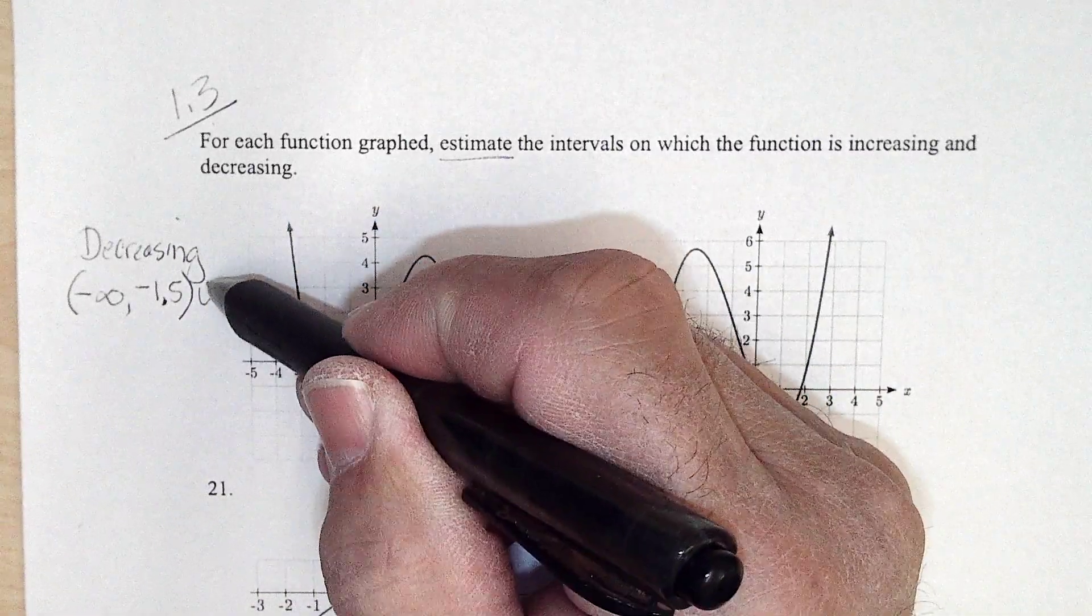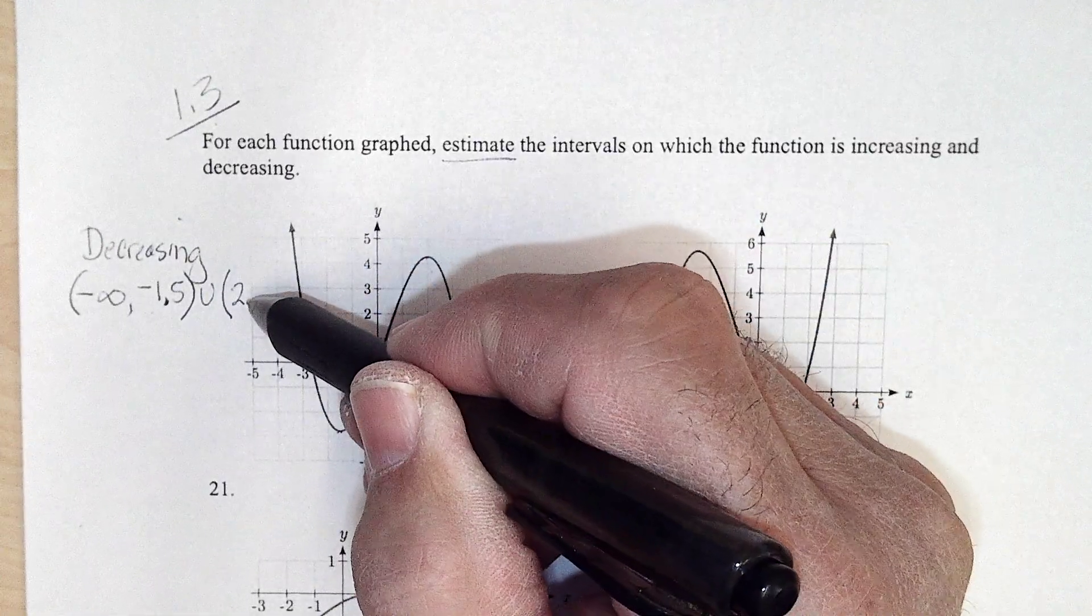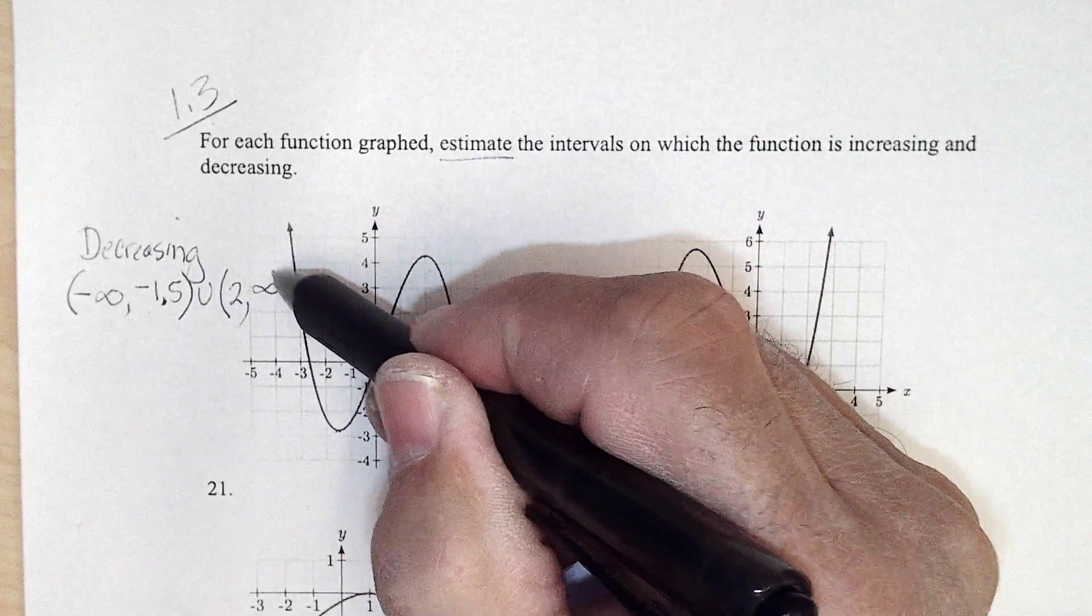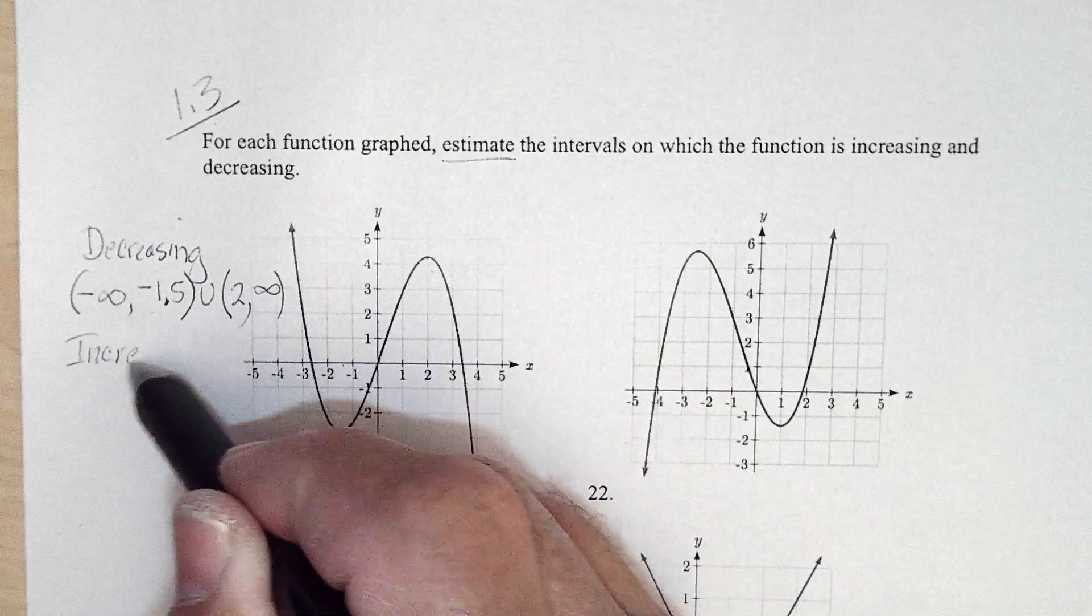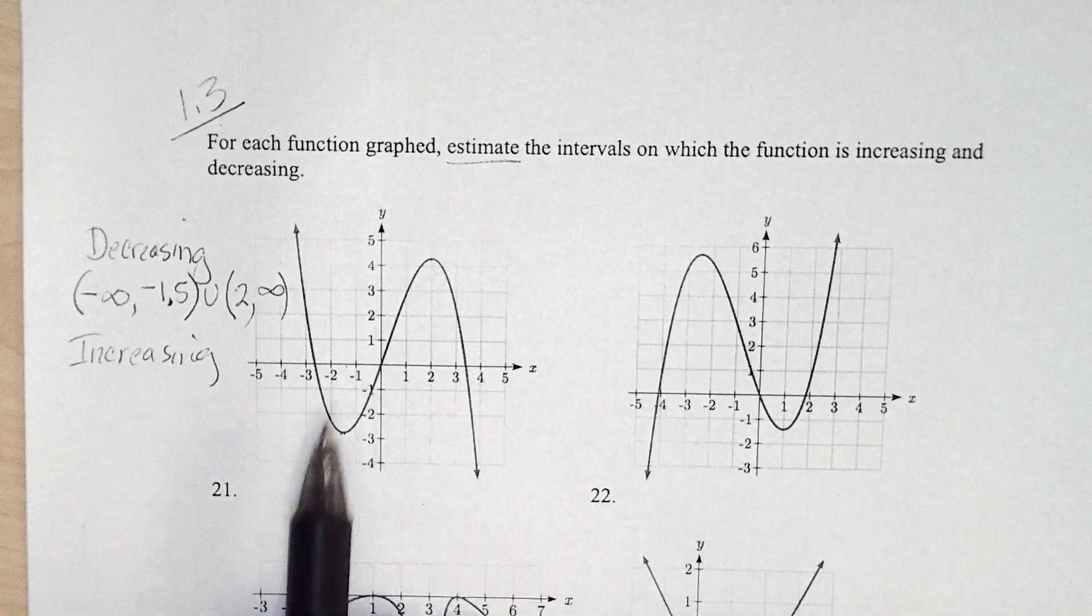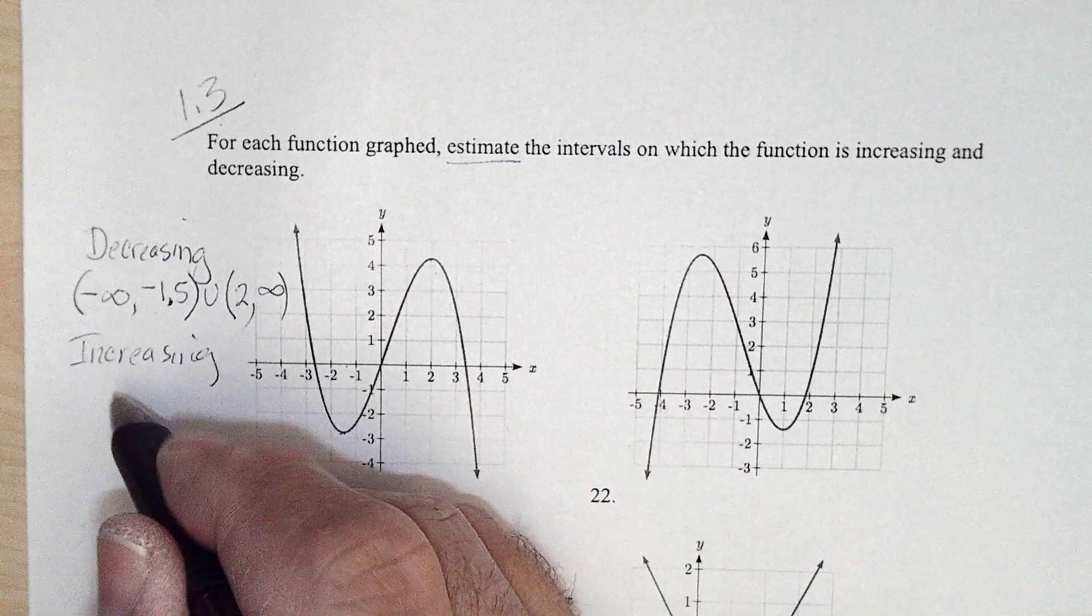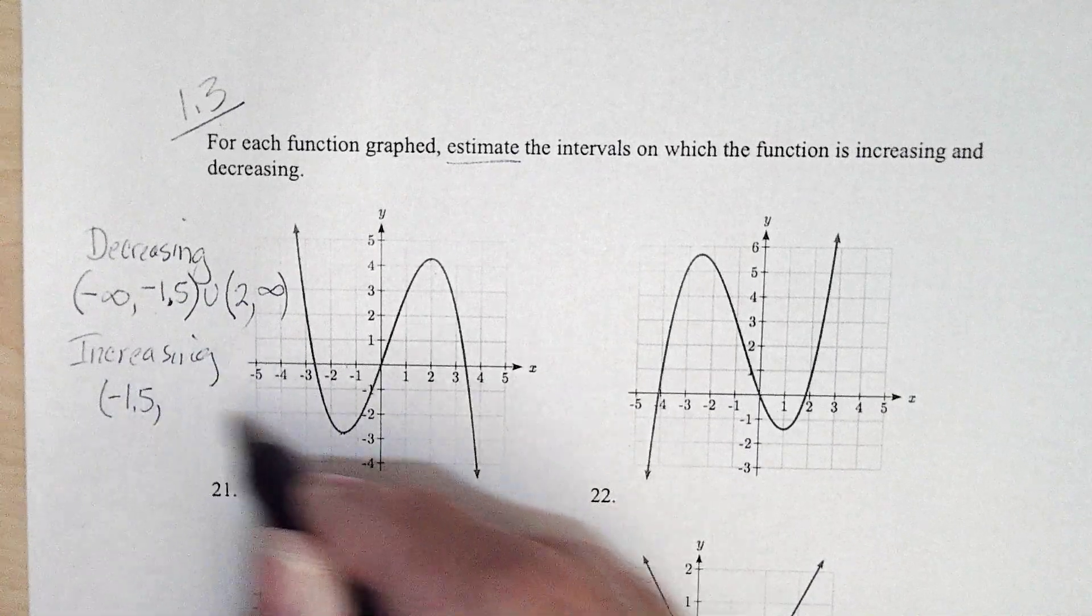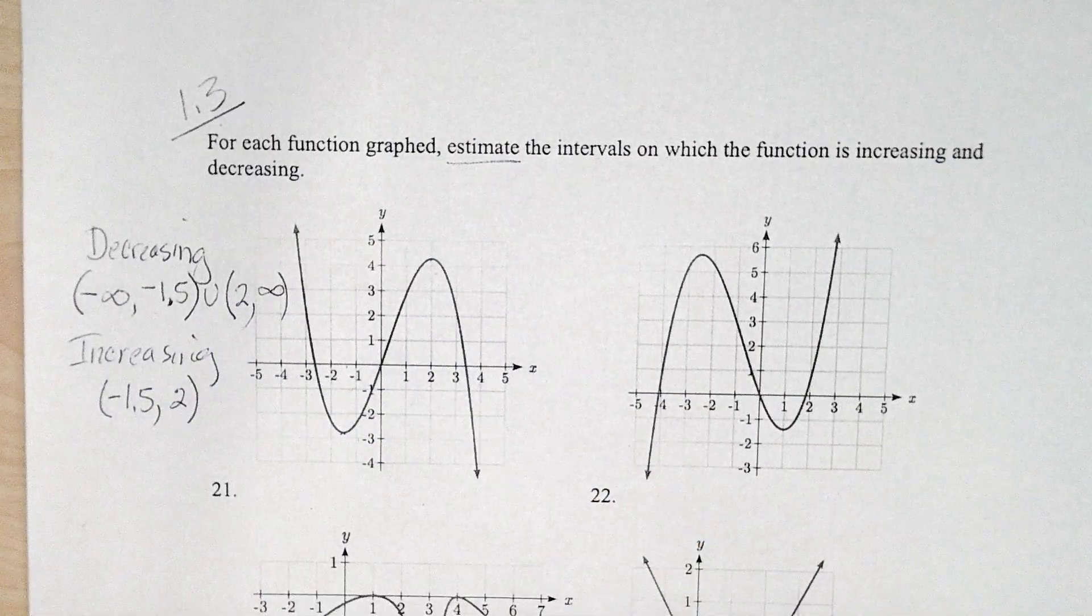It's also decreasing, looks like from about two in the x on. So we always look at the x's. So it's union from two, where it's changing so we don't include it, to positive infinity. And this one looks like it's increasing from negative 1.5, and we don't include it because that's where it's changing, up till two, and we don't include it because that's where it's changing.